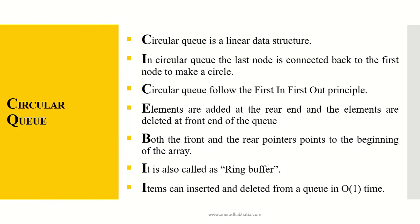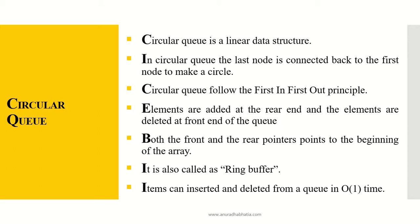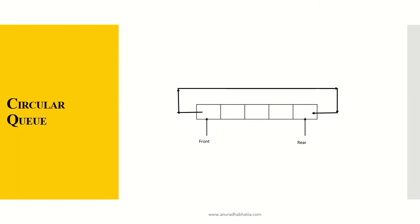Circular queue is a linear data structure where the last node is connected back to the first node to make a circle. As the name suggests, circular queue follows the first-in-first-out principle. Elements are added at the rear end and deleted at the front. Both the front and rear pointers point to the beginning of the array. It is also called a ring buffer, and items are inserted and deleted in O(1) time.